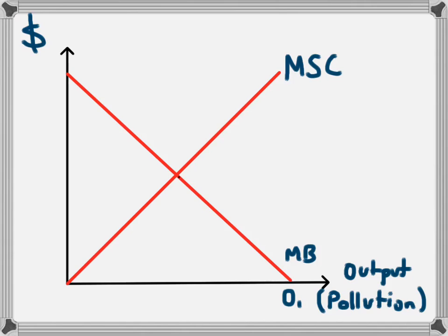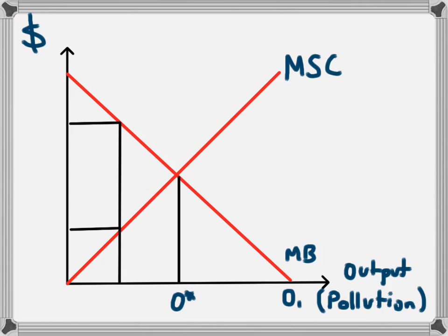The real optimum level of production will be where these curves intersect, so O* will be the optimum level of production. At a lower level, the benefit of producing that output is greater than the social cost, so we should produce it. We should keep producing further along because the benefit is still greater than the cost, until we reach that equilibrium point at O*.